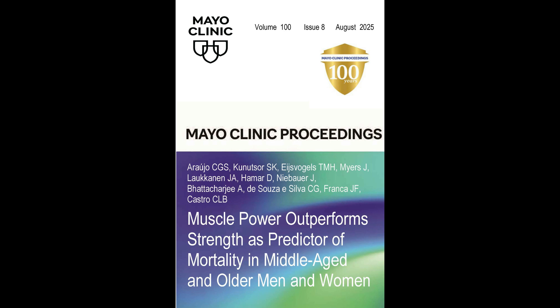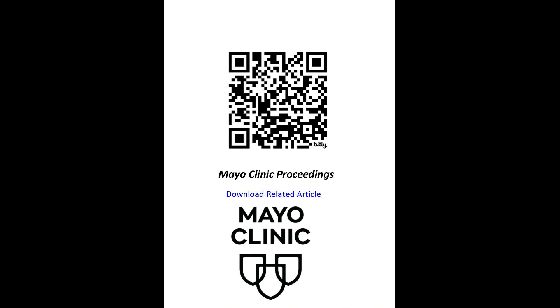Let's talk about our study. The title itself tells a lot: 'Muscle power outperforms strength in predicting mortality in middle-aged and older men and women.' I have the pleasure of sharing the article we are publishing in the centennial edition, volume 100, of the prestigious Mayo Clinic Proceedings.